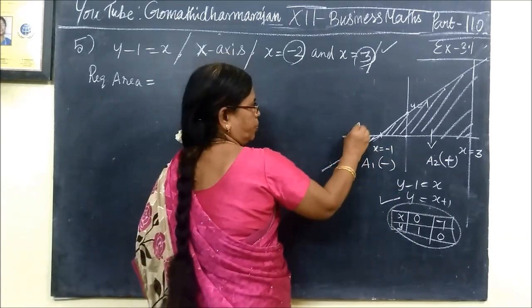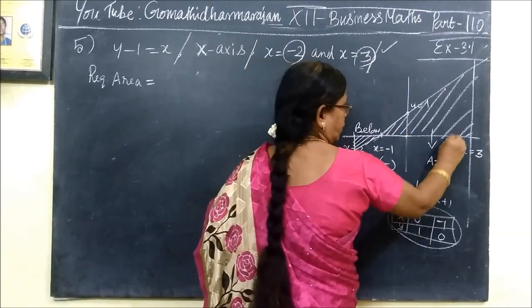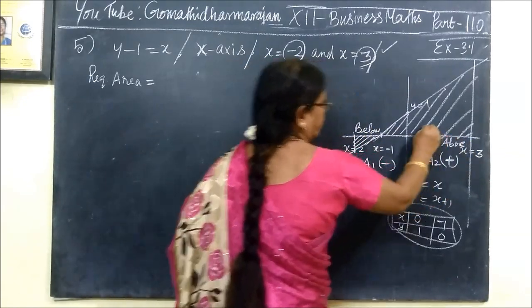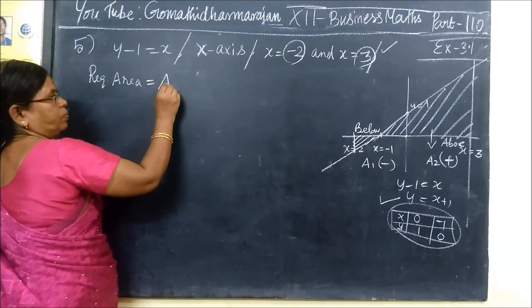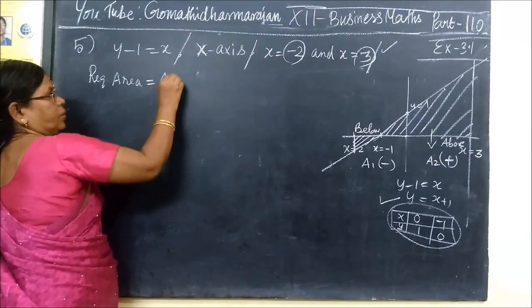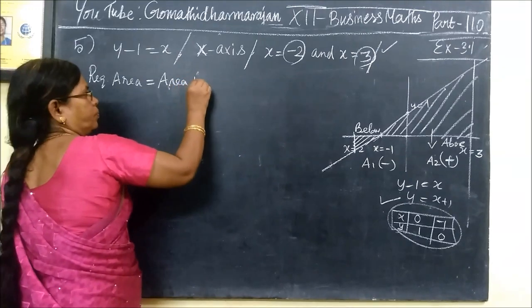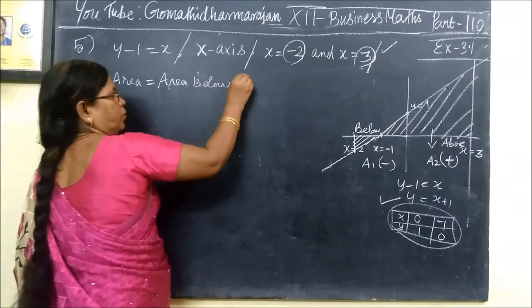Below the graph is minus. Then this is above the x-axis. When we look at the required area, A1 plus A2, this is the area.